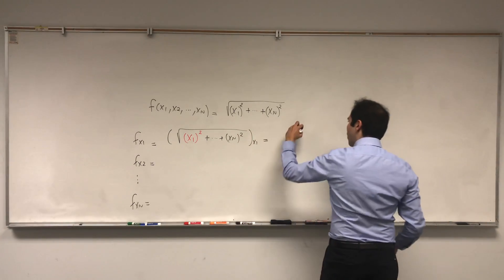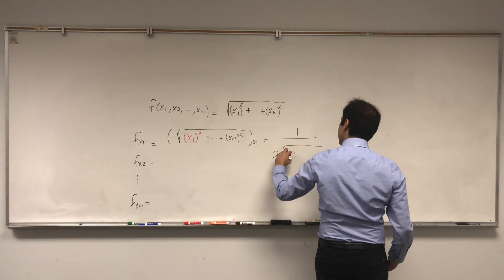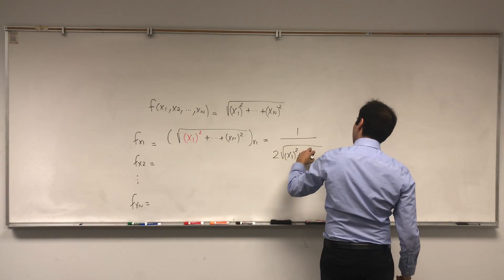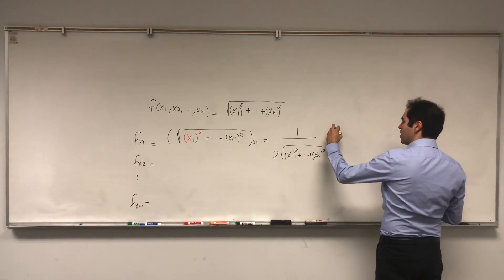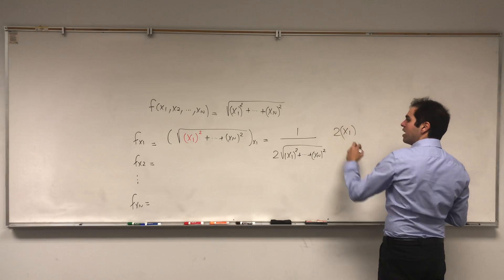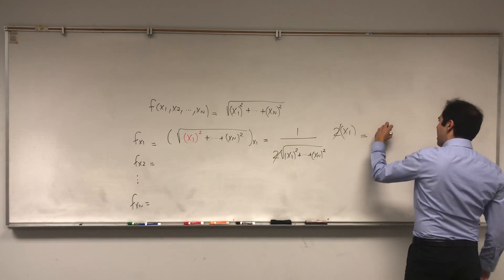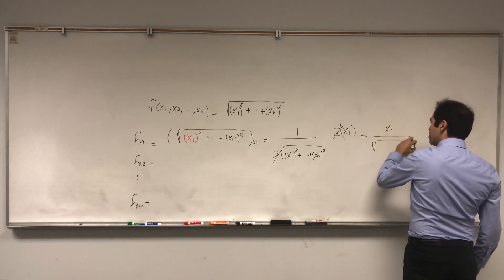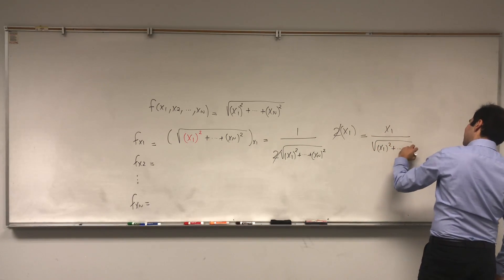So you do 1 over 2, square root of x1 squared plus dot dot dot plus xn squared, and then times the derivative of x1 squared, which is 2x1, and this cancels out, and you get x1 over square root of x1 squared plus dot dot dot plus xn squared.